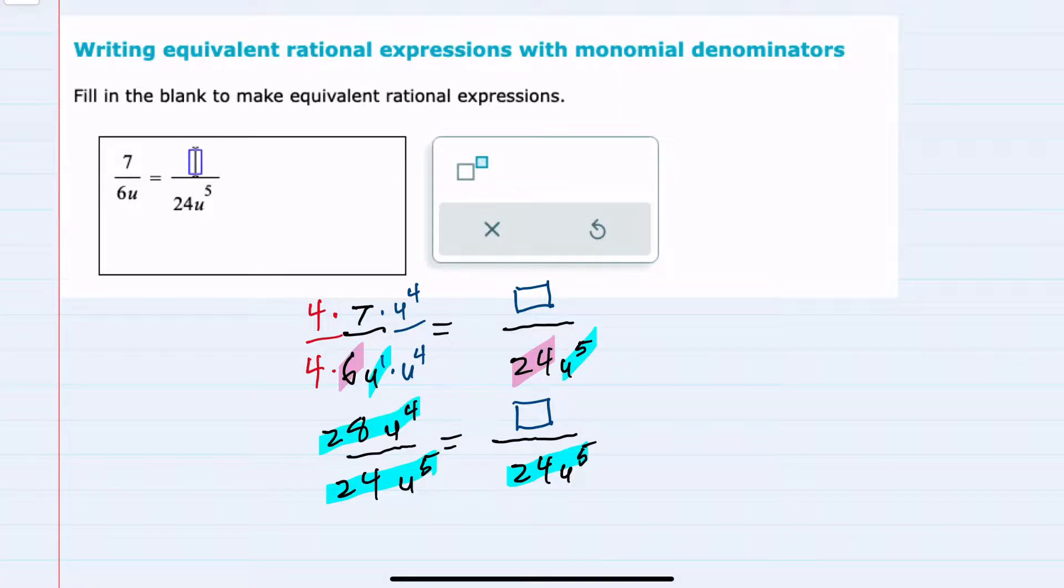So this 28u to the 4th would have to be the value in the numerator on the right-hand side. So we have found that missing value as 28u to the 4th.